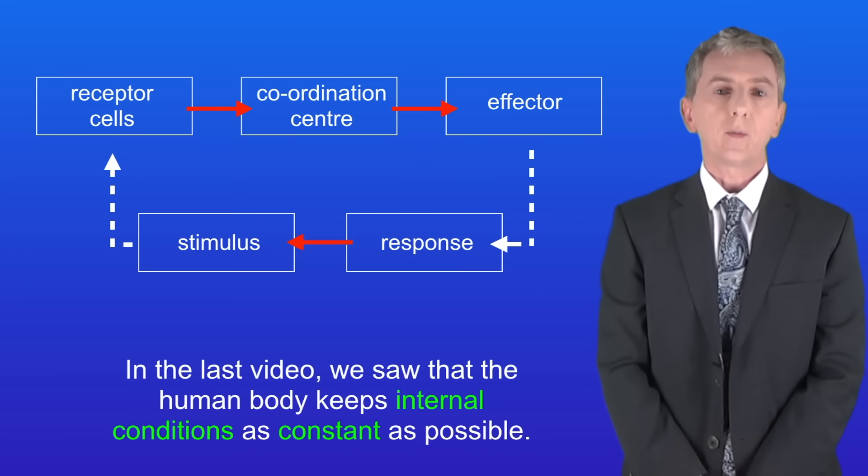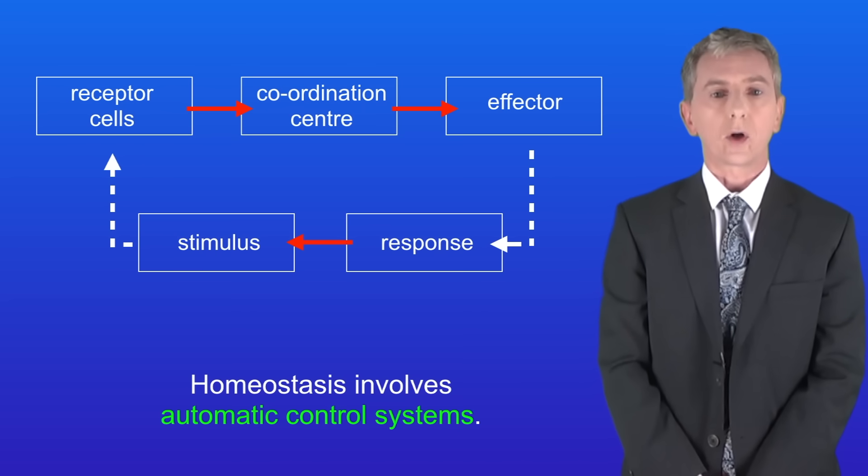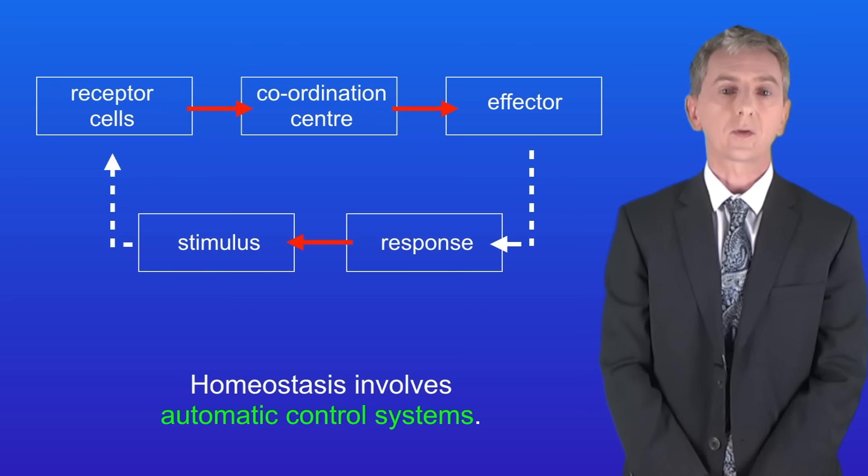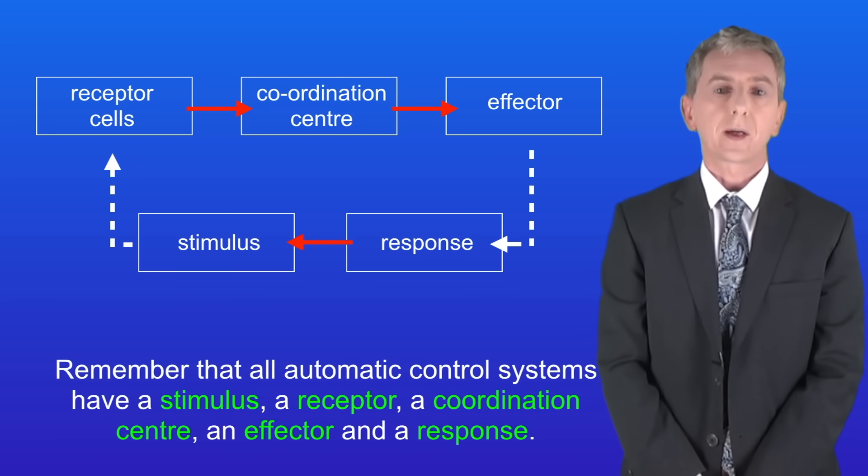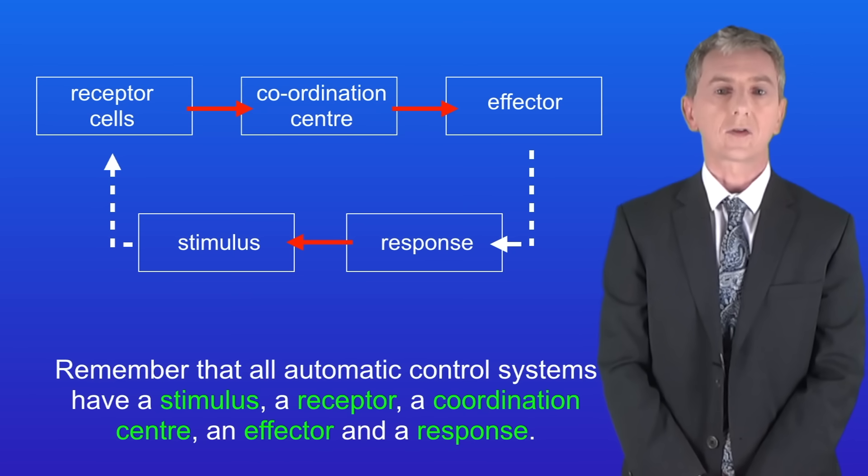In the last video we saw that the human body keeps internal conditions as constant as possible and scientists call this homeostasis. Homeostasis involves automatic control systems. Remember that all automatic control systems have a stimulus, a receptor, a coordination centre, an effector and a response.